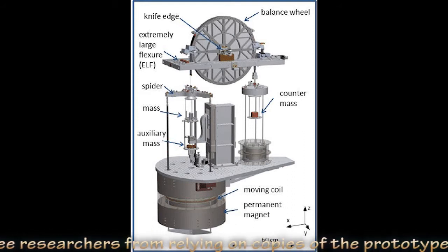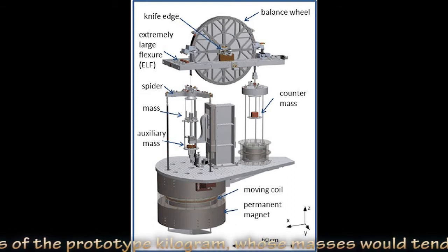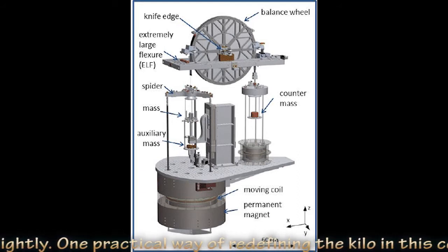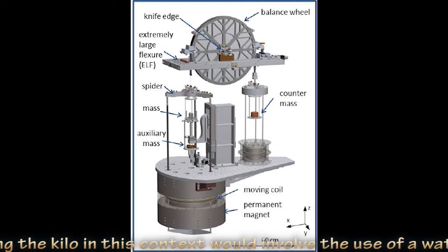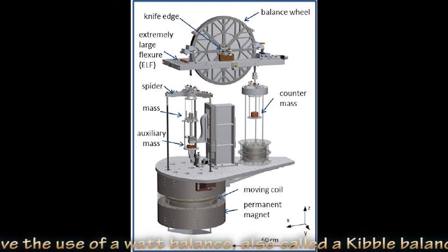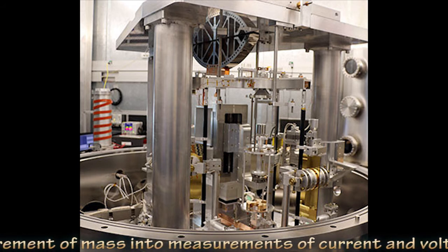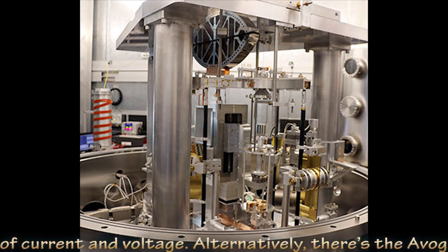This would free researchers from relying on copies of the prototype kilogram, whose masses would tend to vary ever so slightly. One practical way of redefining the kilo in this context would involve the use of a watt balance, also called a Kibble balance, a device which converts a measurement of mass into measurements of current and voltage.